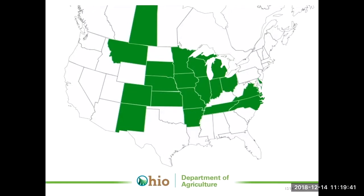My role here in Ohio as the data steward is to verify the information of locations coming into the system, do some quality control, and make sure we don't get junk data into the program. I also act as a point of contact for Ohio users — folks can contact me if they have questions or need help. They can also contact FieldWatch directly, as they have their own customer service and tech support.